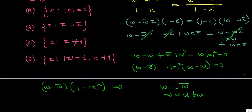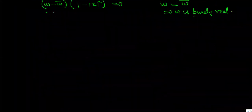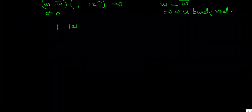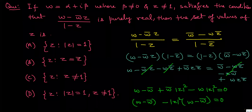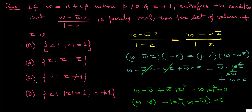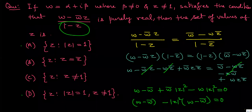Now omega minus omega-bar equals 2i·beta. Since beta is not equal to 0, omega is not purely real, so omega minus omega-bar cannot be zero. Therefore 1 minus mod z squared equals 0, giving mod z equals 1. But since z is not equal to 1 (as given, otherwise the expression is undefined), the answer is C: mod z equals 1 and z not equal to 1.